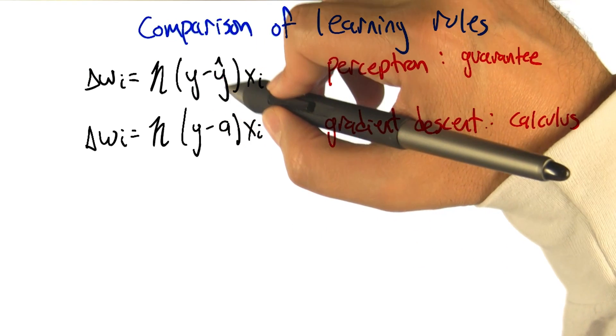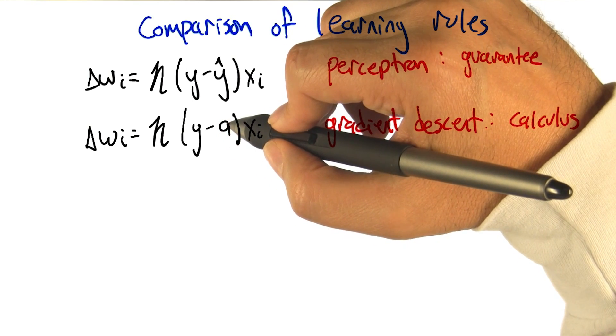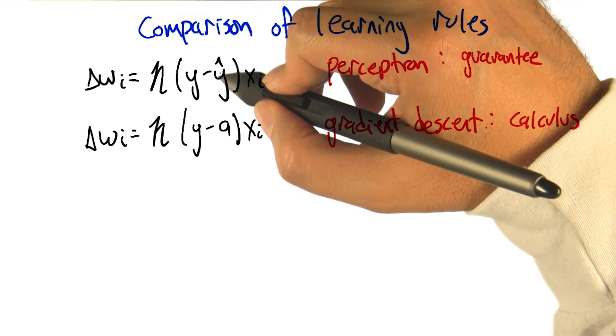Whereas in the perceptron case, what we were doing is taking that same activation and thresholding it, like determining whether it's positive or negative, putting in a zero or a one, and putting that in here, that's what y hat is.